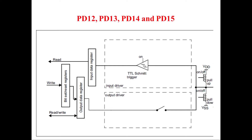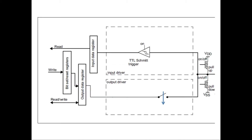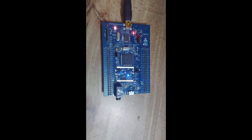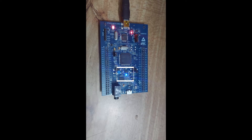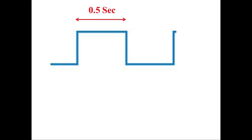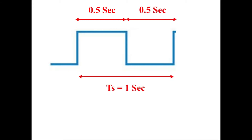On the STM32F4 discovery board, LEDs are connected on ports PD12, PD13, PD14, and PD15. When the switch is turned on, these LEDs will glow because current from the DC voltage source flows via a current-limiting resistor to the LED. Let us write a code in the microcontroller which will allow the LED to blink at a very low frequency so it can be seen turning on and off easily. As can be seen, the LED is turned on and off every second — remaining on for 0.5 seconds and off for 0.5 seconds, giving a switching frequency of one Hz.